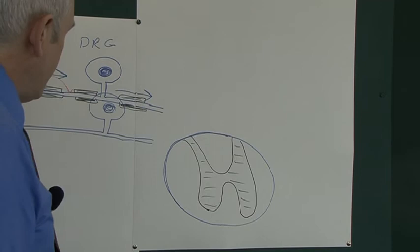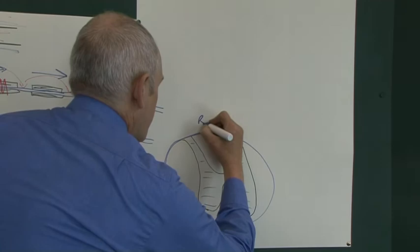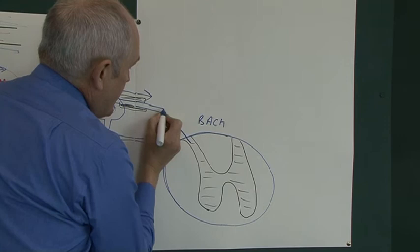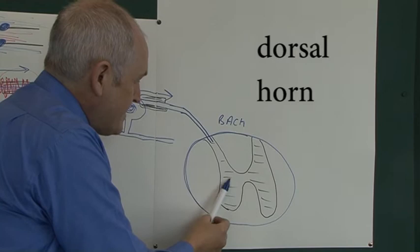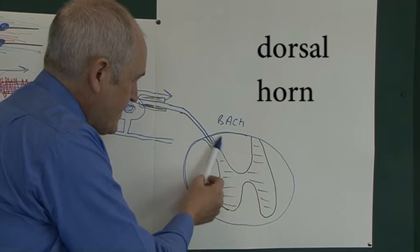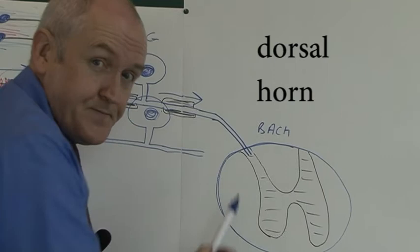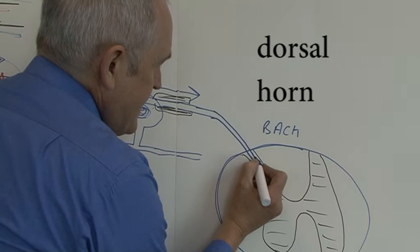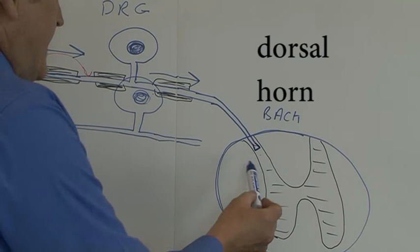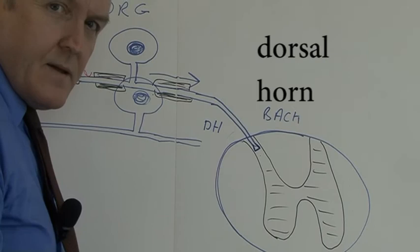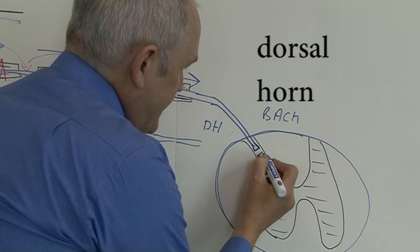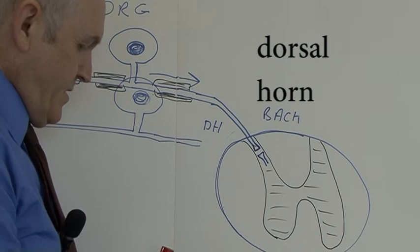The A-delta fibre goes in at the back — the dorsal surface — and enters this part of the grey matter at the back, called the dorsal horn of the spinal cord. The first neuron terminates in the dorsal horn. Now there's a synapse with a secondary neuron. The first neuron has done its job, and there's a secondary neuron there.